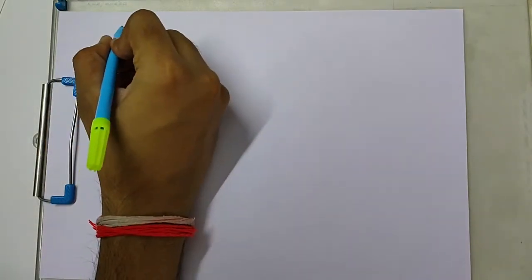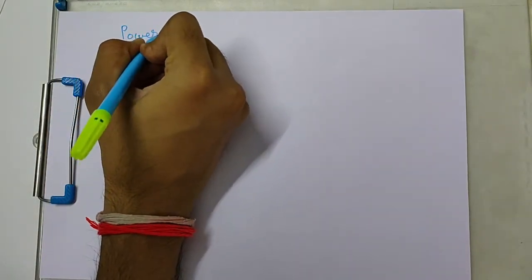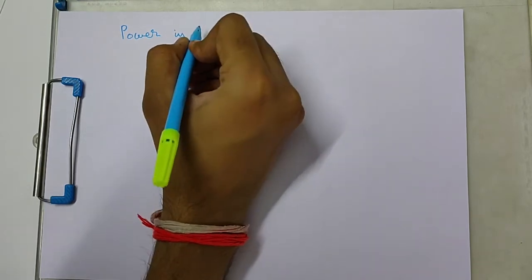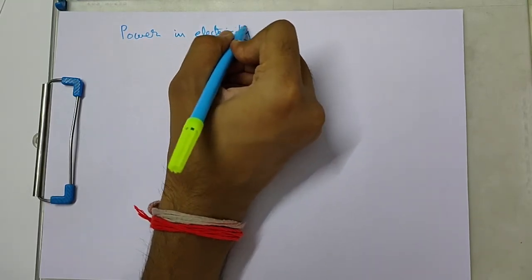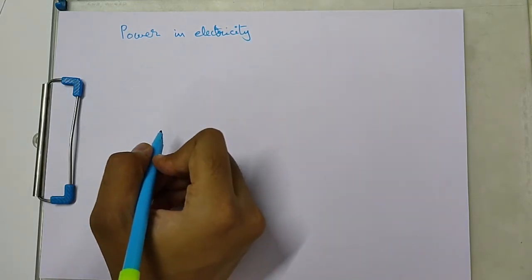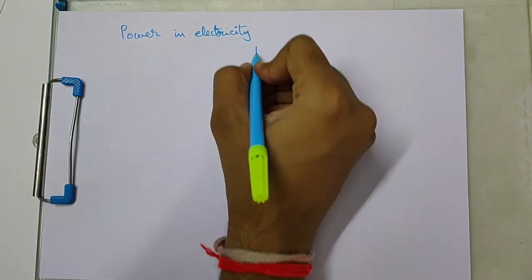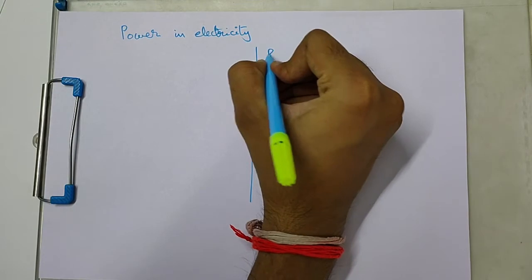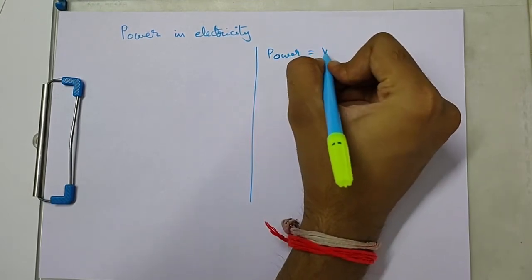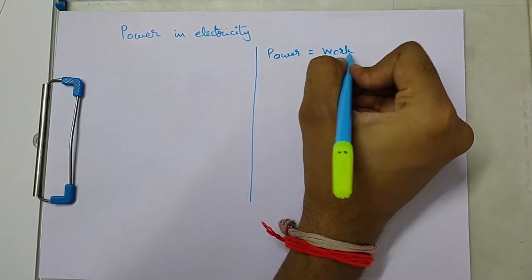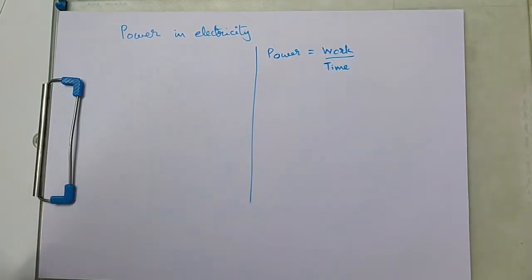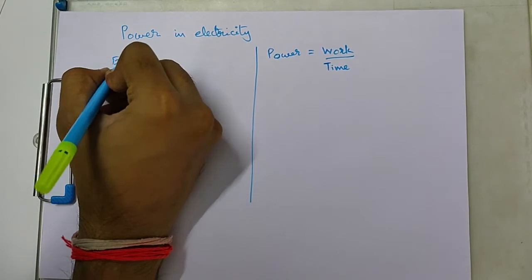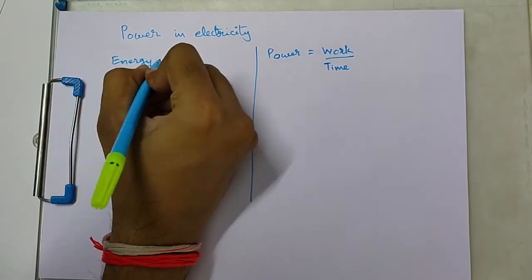In this video, we will derive the equation of power in terms of electrical parameters. We all know that power is defined as the rate of doing work, that is work done in unit time, and energy is required to do work.